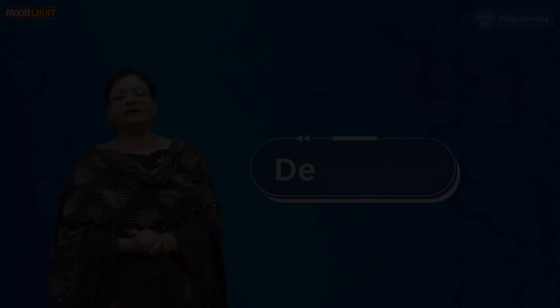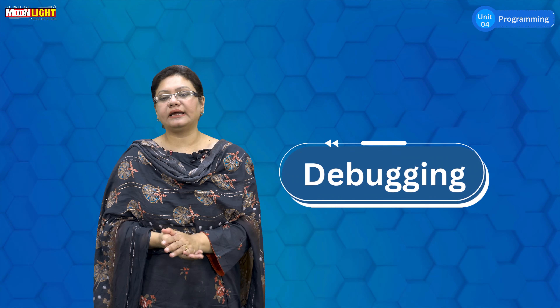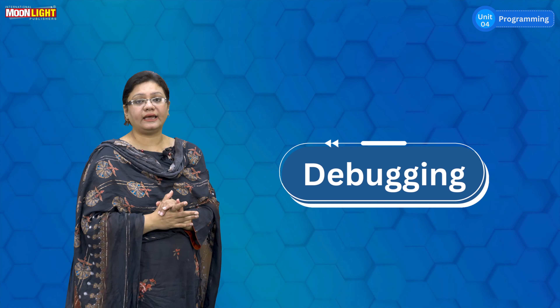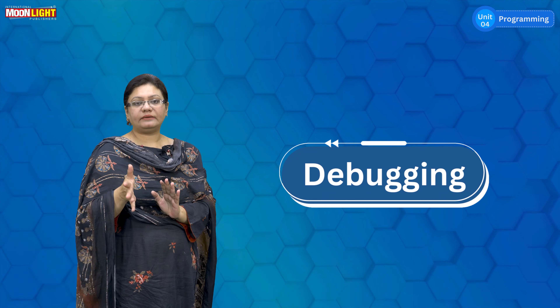Our chapter is programming. We have learned a lot about programming. Today, our last topic is Debugging. First, I will tell you about Debugging. Debugging is called to find and remove an error — not only find out the error, but then remove it and finish it.